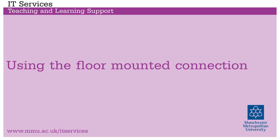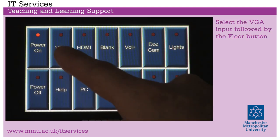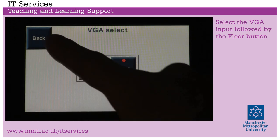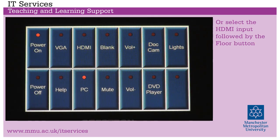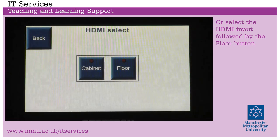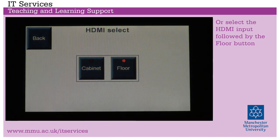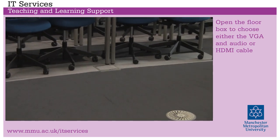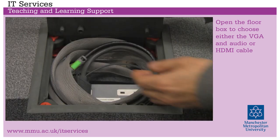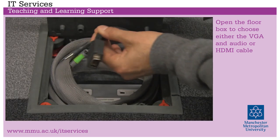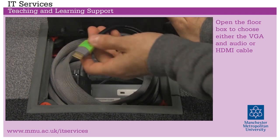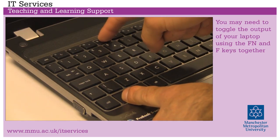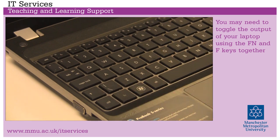Using the floor mounted connection. Select the VGA input followed by the floor button, or select the HDMI input followed by the floor button. Open the floor box to choose either the VGA and audio or HDMI cable. You may need to toggle the output of your laptop using the FN and F keys together.